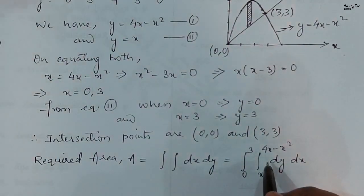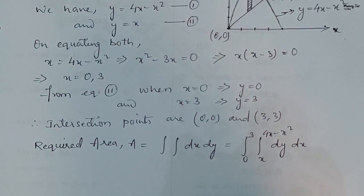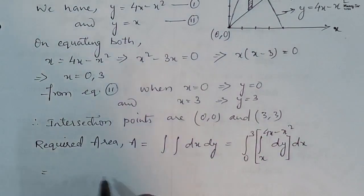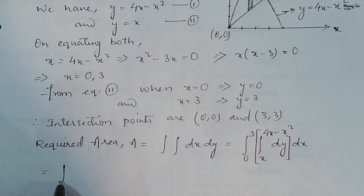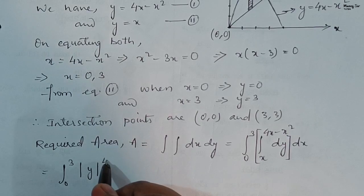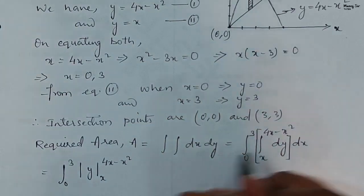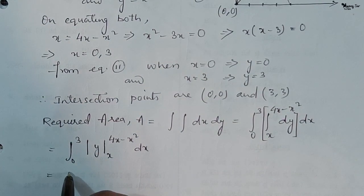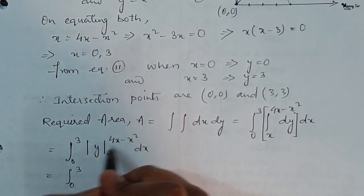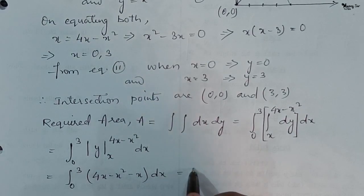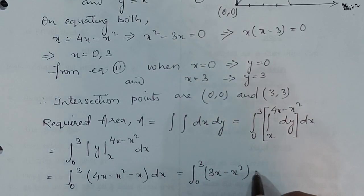There is no explicit function inside, so the function is 1. Integrating with respect to y first, this becomes the integral from 0 to 3 of [y] evaluated from x to 4x minus x squared, all dx. This gives the integral from 0 to 3 of (4x minus x squared minus x) dx, which simplifies to the integral from 0 to 3 of (3x minus x squared) dx.